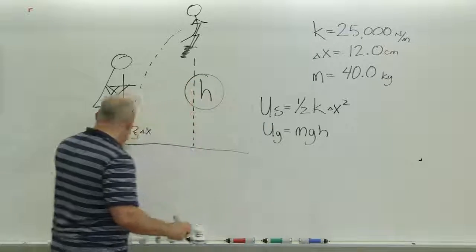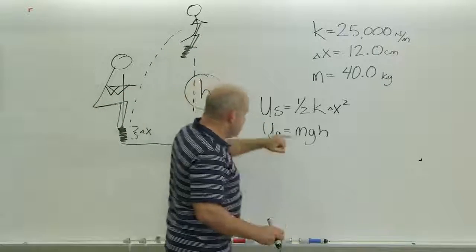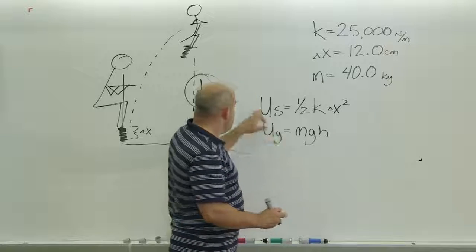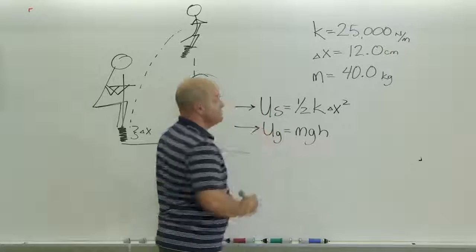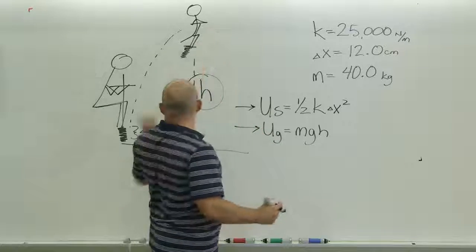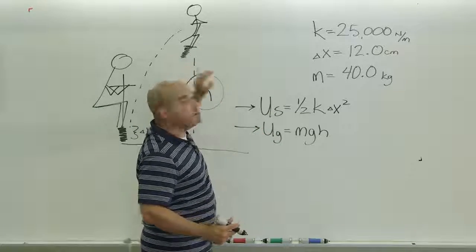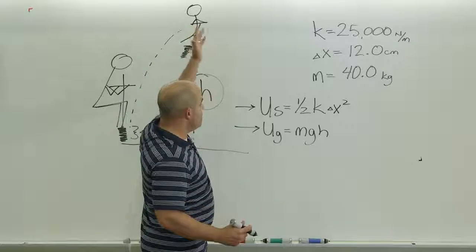So the formulas we're going to use: all this energy in the spring got converted into the gravitational potential energy. I'm just going to say this energy, the spring potential, and this energy, the gravitational potential, are equal at those points. At points in between it's a little trickier, but since I'm going from the lowest point to the highest point, all this spring energy gets converted into gravitational.